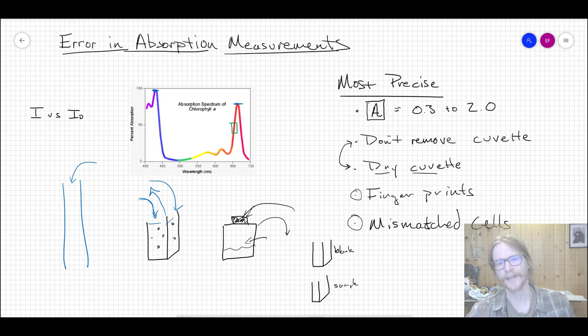They're really expensive because they're precision machined to match each other. And that's because you're measuring I0 and I simultaneously, you want to make sure that these things, the pathlengths are identical. Otherwise, there's going to be a systematic error associated with these. Most of these other things could manifest as either systematic or random. This would definitely be a systematic type error.